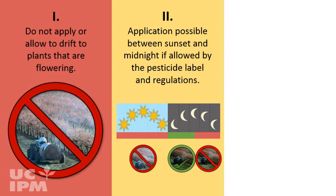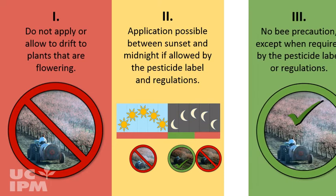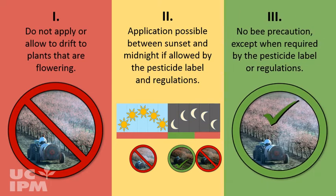For pesticides rated 3, or green, there are no bee precautions, unless required by the pesticide label or regulations.